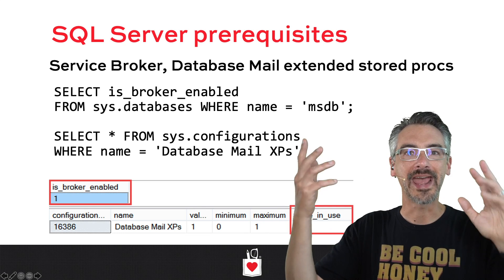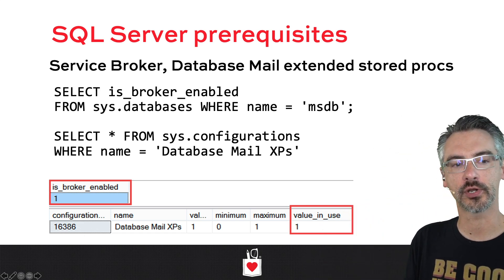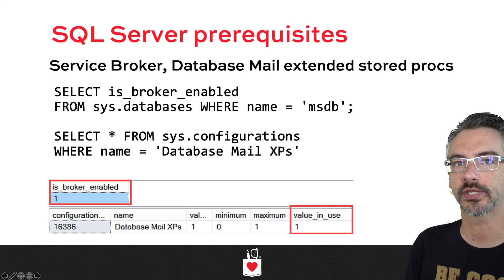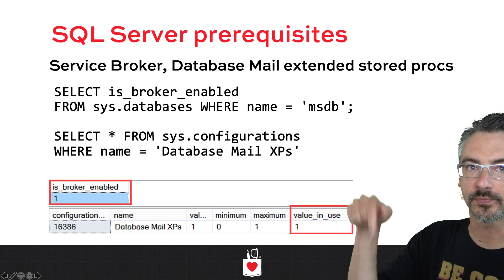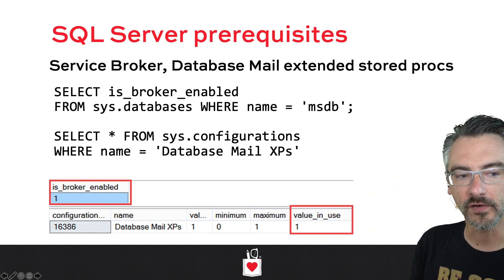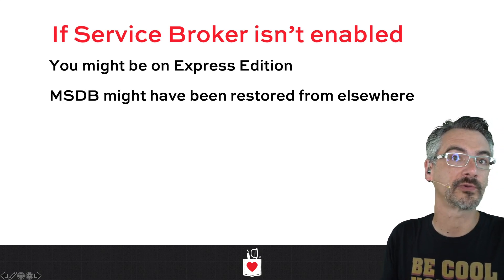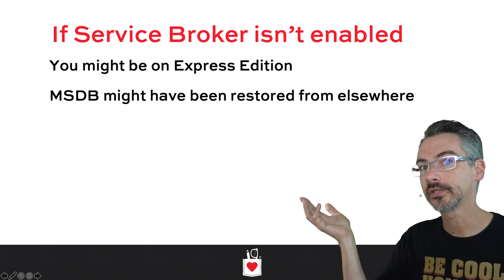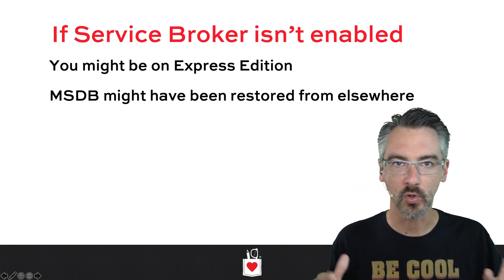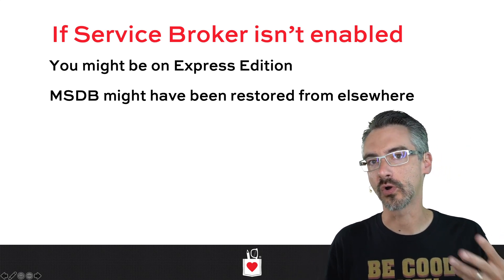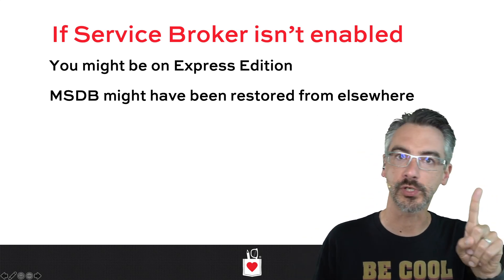On the SQL Server side, after you've gathered your SMTP server config and your distribution list email address, you're going to need to make sure the SQL Server is ready to go. You're going to check that service broker is enabled and that the database mail extended stored procedures are turned on. Run these two queries — they're both in the show notes for this class — and look for the values shown on the screen. If service broker isn't enabled, it's possible you're working with SQL Server Express or something in Azure that doesn't support database mail. Also make sure MSDB wasn't restored from somewhere, because that can break service broker.